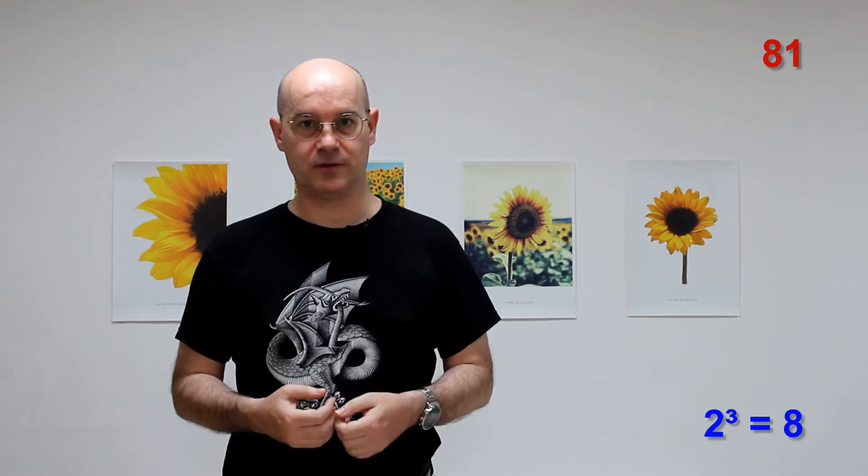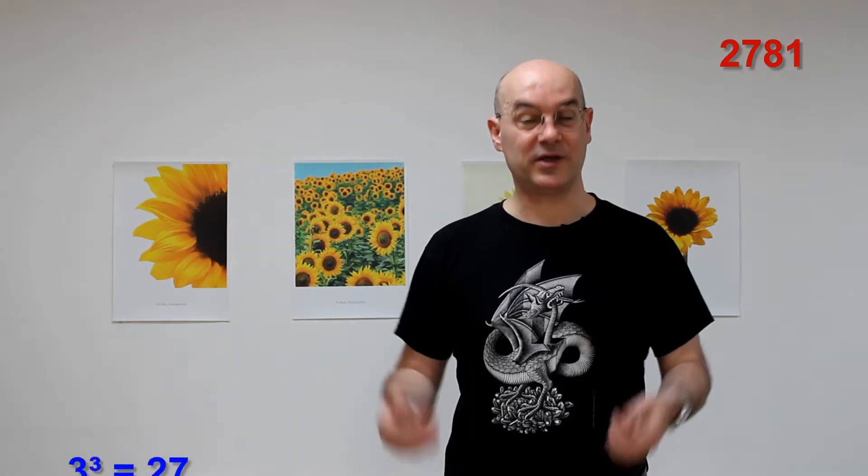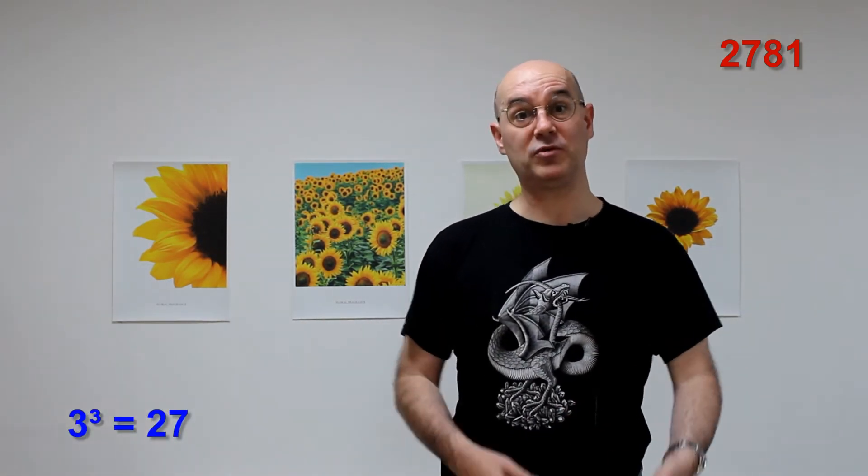And then, next to it, we write 2 cubed, which is 8. Okay, that makes 81, which is a multiple of 3. We keep going with 3, which cubed makes 27. And we get 2,781, which is a multiple of 3.